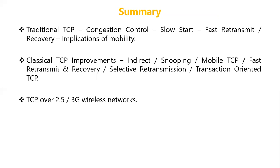This session particularly concentrated on TCP. There are two main protocols in the transport layer: TCP and UDP. No changes are needed for UDP — whatever modification is done in mobile IP is sufficient for UDP to work. But that is not the case with TCP, because TCP tries to provide reliable data delivery, which makes it more complex. Some improvements are required in TCP so that it will perform better in the wireless scenario.